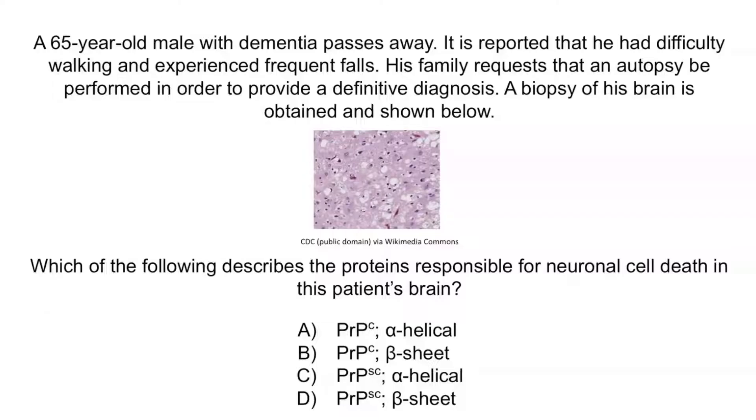Now let's review with a question. A 65-year-old male with dementia passes away. It is reported that he had difficulty walking and experienced frequent falls. His family requests an autopsy for a definitive diagnosis, and a biopsy of his brain is obtained. Which of the following describes the proteins responsible for neuronal cell death? From the question stem, you should notice that this patient had dementia and ataxia — difficulty walking and frequent falls — both symptoms of spongiform encephalopathy. The biopsy showing vacuolations left behind from apoptosed neurons is why we identify this as spongiform encephalopathy, giving the disease that spongy appearance.